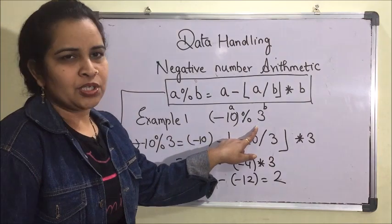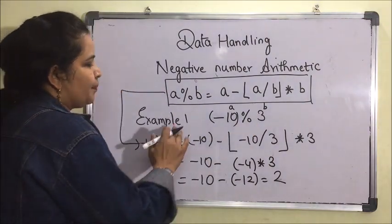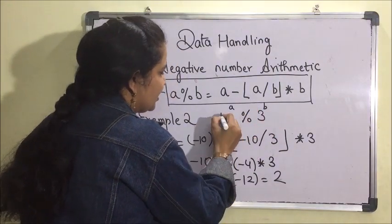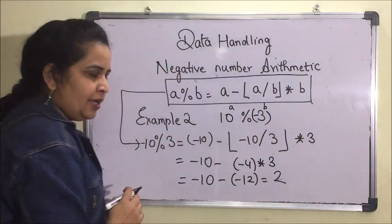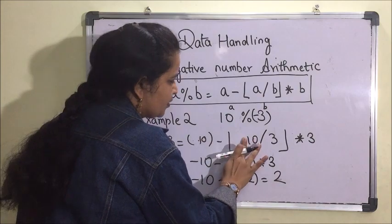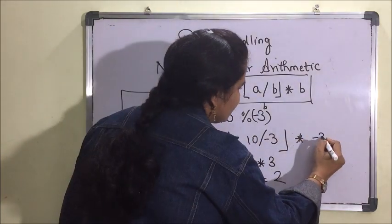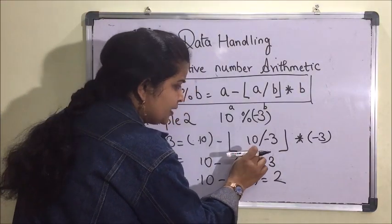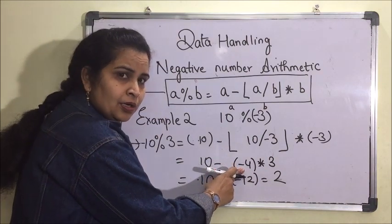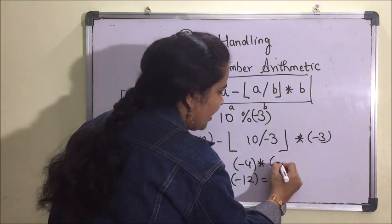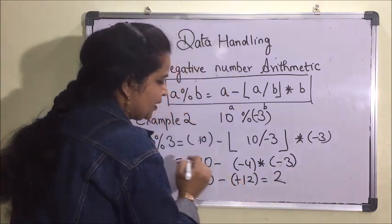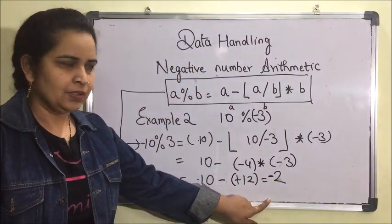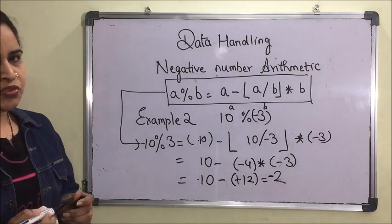Now for Example 2, suppose the divisor is a negative number — so the dividend is positive and the divisor is negative. In this case the floor function will also return minus 4, and minus 4 multiplied by minus 3 gives plus 12. So the result is 10 minus 12, which gives minus 2.